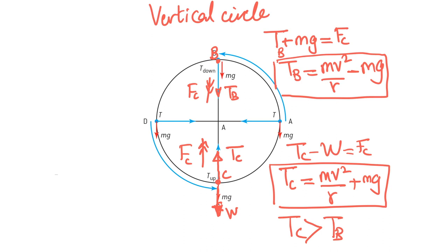So I have to ask you a question. This is a rope, and you have an object spinning on it — at which point would the rope break, or at which point are the chances of breaking highest? The answer is point C. The reason is that the tension at point C is the highest. So if they ever ask you to mark a point where the probability is highest that the rope will break, you will mark point C — that is the point where the rope or whatever is connecting the object is most likely to break.